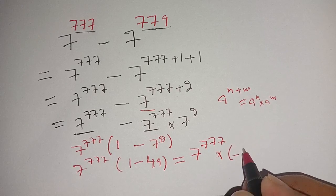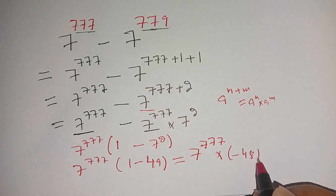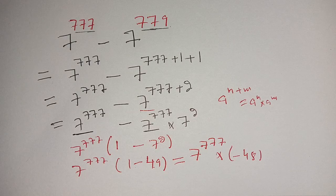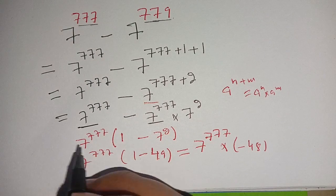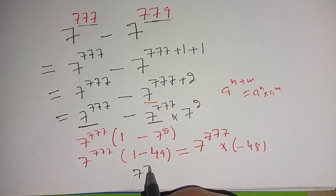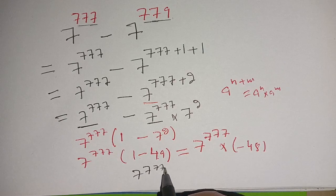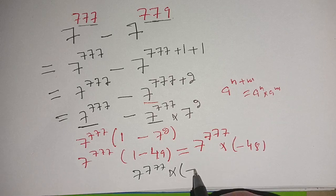We can factorize this 48 as 7^777 times minus 48.